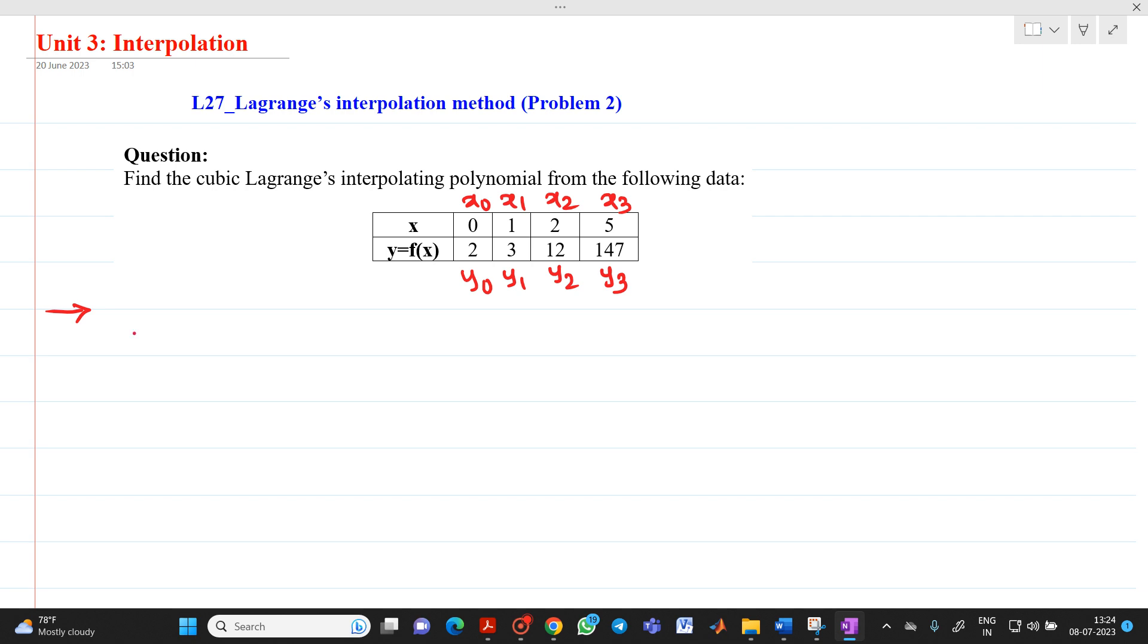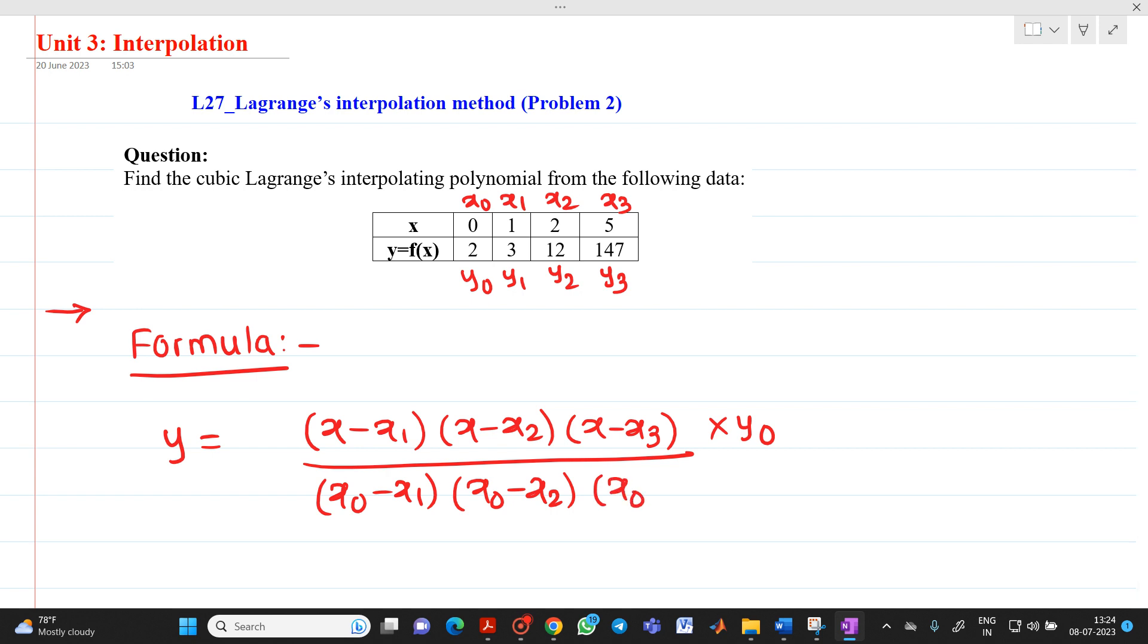Formula will be, y equal to x minus x1, x minus x2, x minus x3, into y0, whole divided by x0 minus x1, x0 minus x2, and x0 minus x3, plus